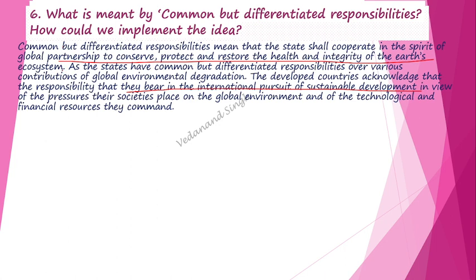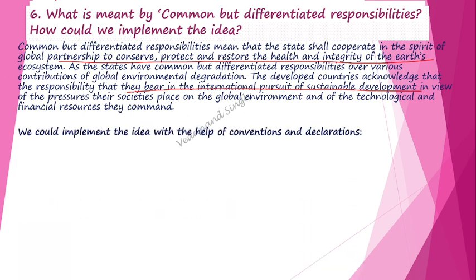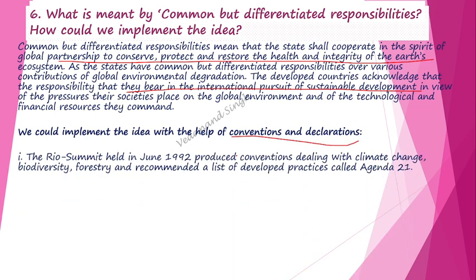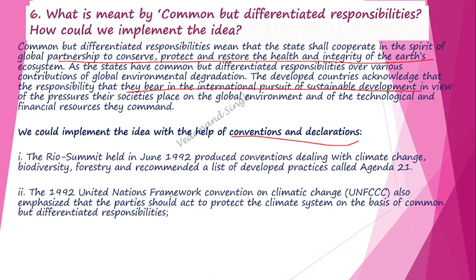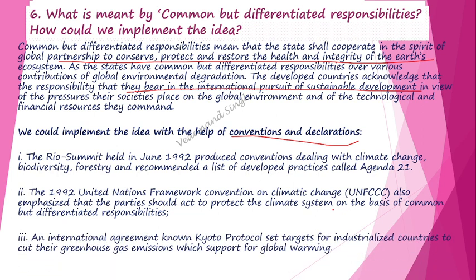We can implement the idea of common but differentiated responsibilities through conventions and declarations. First, the Rio Summit of 1992 produced conventions on climate change, biodiversity, and forestry, and recommended Agenda 21. Second, the 1992 UN Framework Convention on Climate Change emphasized that parties should act to protect the climate system on the basis of common but differentiated responsibilities. Third, the Kyoto Protocol set targets for industrialized countries to cut their greenhouse gas emissions to address global warming.